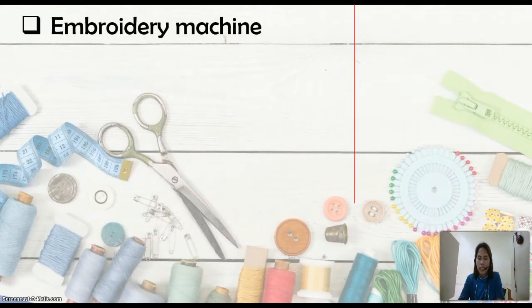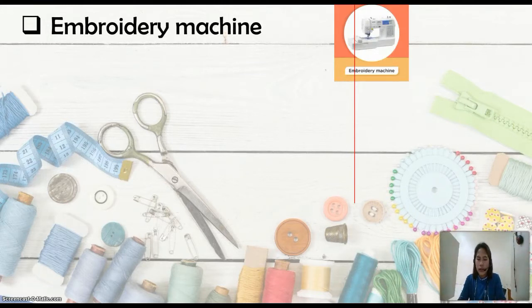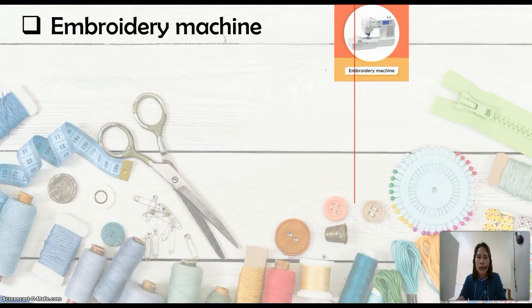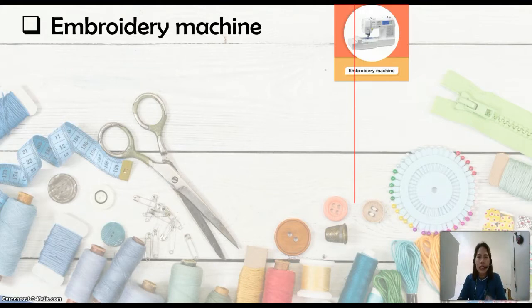Next is the embroidery machine, commonly seen in the fashion industry and used to decorate garments by creating ornamental embroidery stitches. There are now computerized embroidery machines specifically engineered to create intricate designs. Before, our mothers and grandmothers embroidered their clothes manually by hand. Now we have computer-generated embroidery. You set or scan the design you want placed on the fabric, and the machine automatically embroiders it. Of course, you need to set the thread colors to be used.